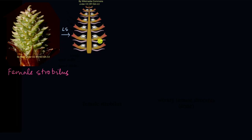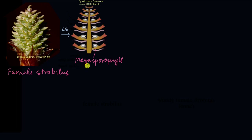If you look at the longitudinal section, you see these parts that seem to arise from the central axis. Each of these parts is a sporophyll — the female sporophyll, which is also called the megasporophyll. 'Mega' means big and 'micro' means small. Microsporophyll would be the sporophyll present in the male cone, because microspores are present in male cones and megaspores are present in female cones. The male spores are much smaller than the female spores.